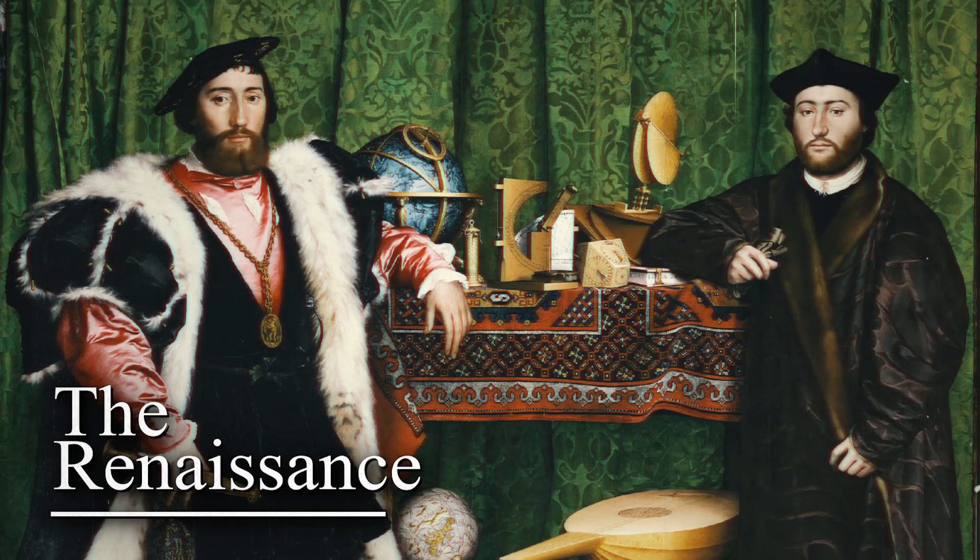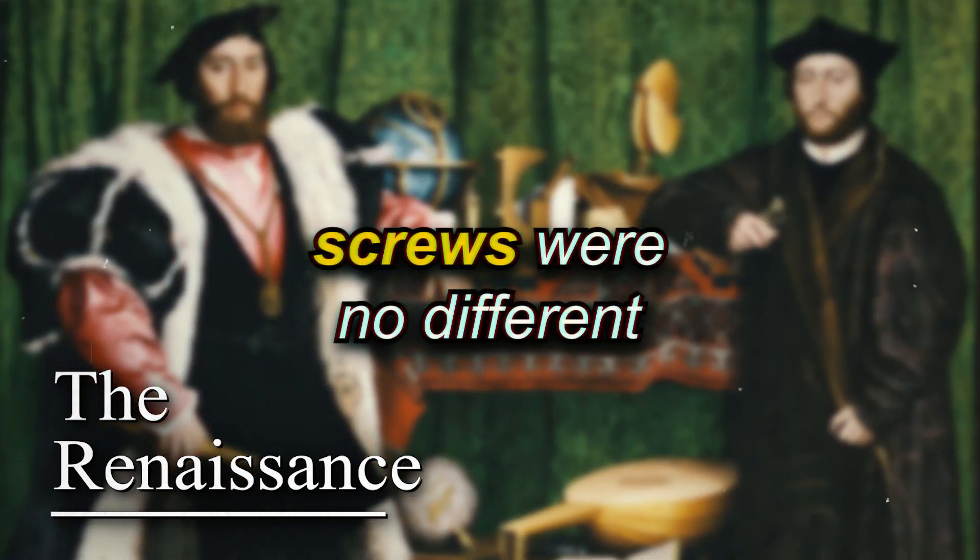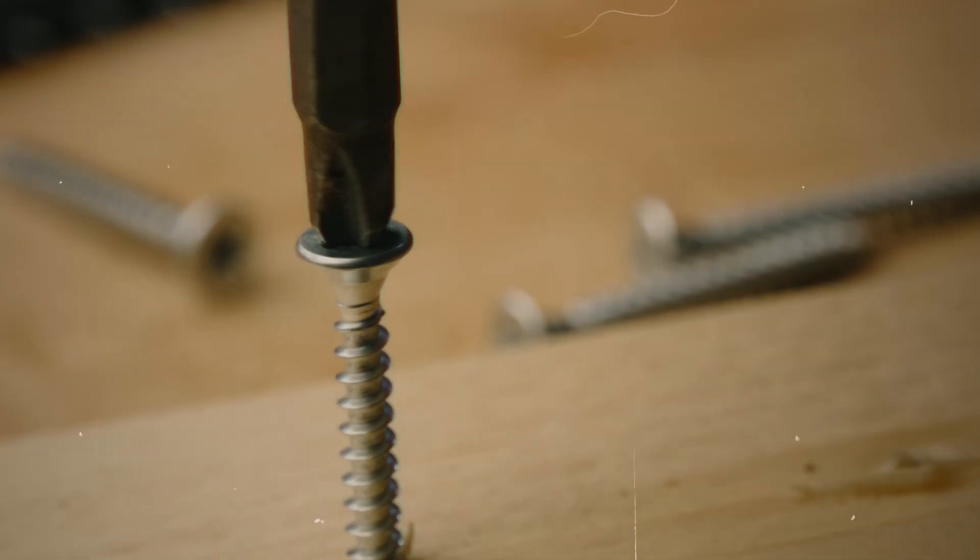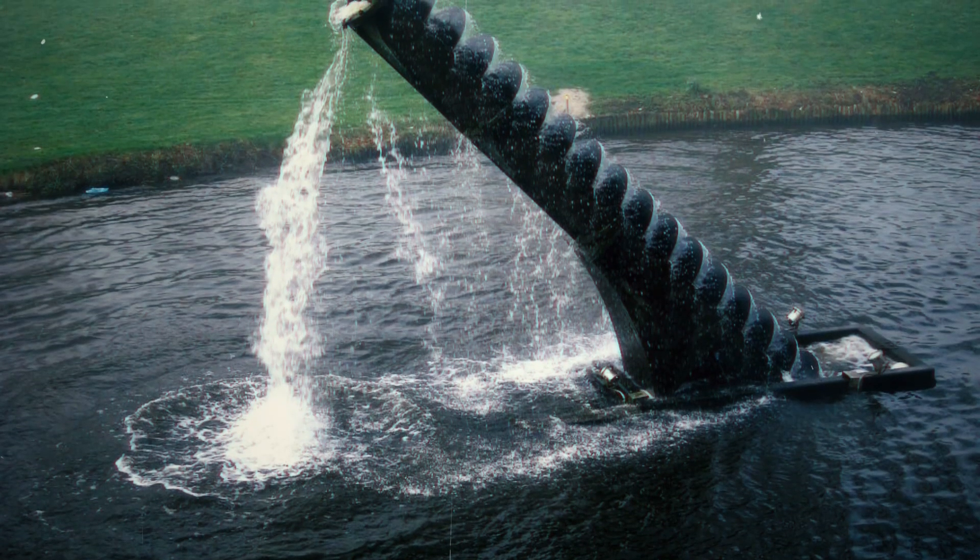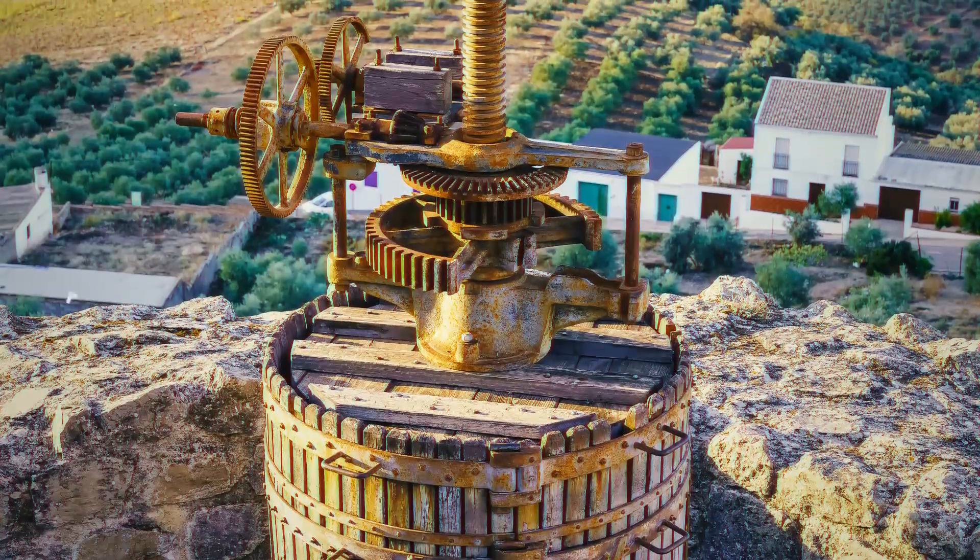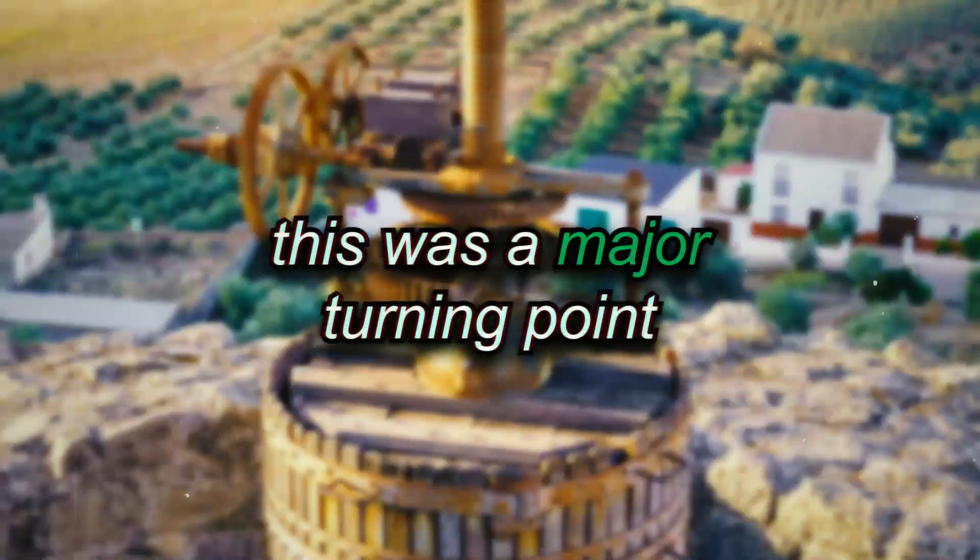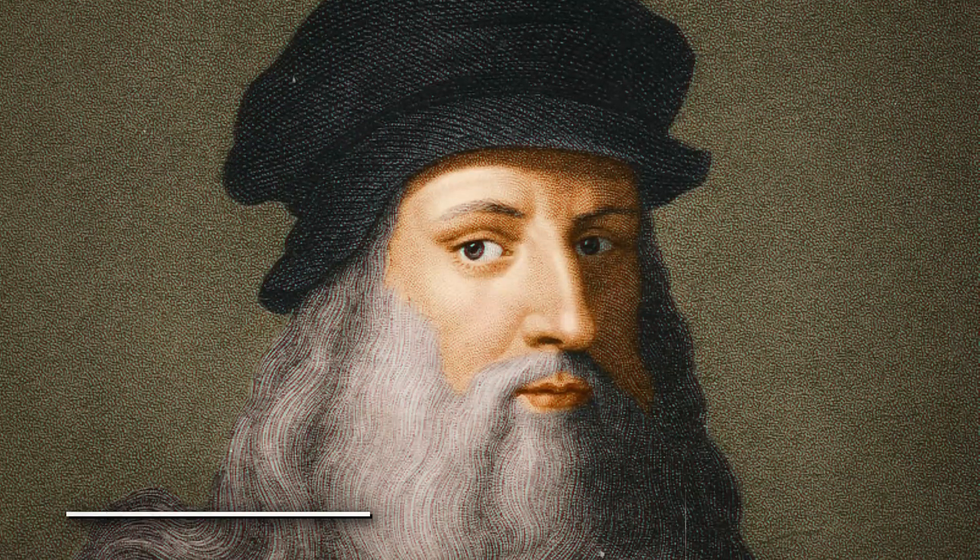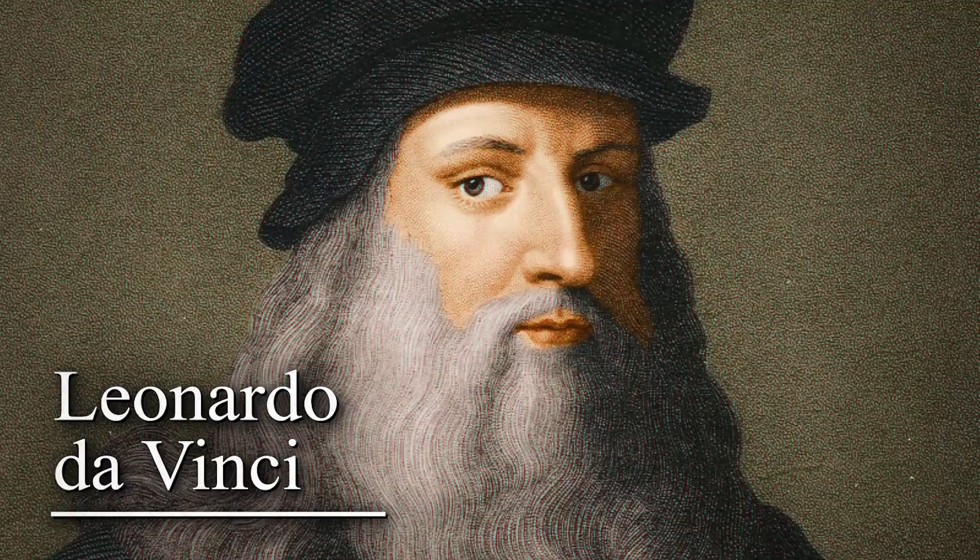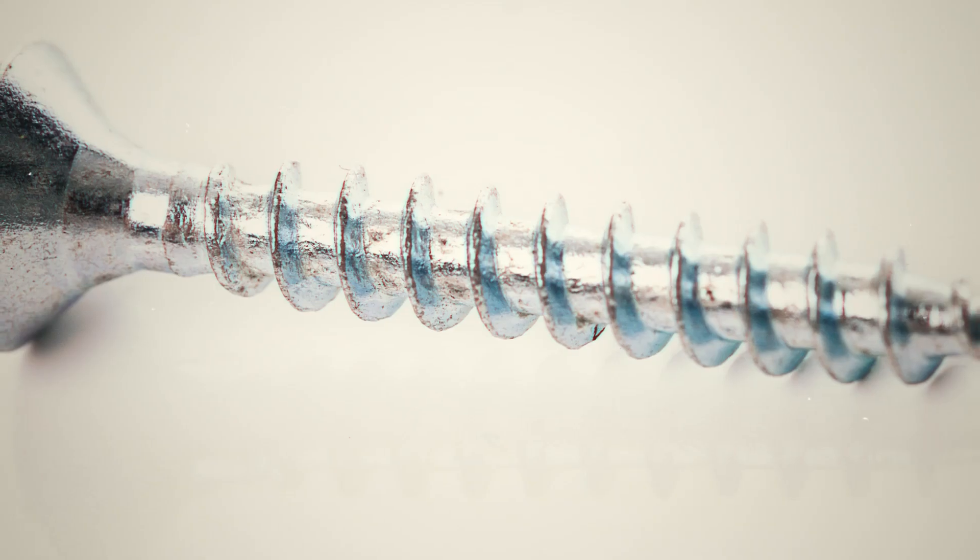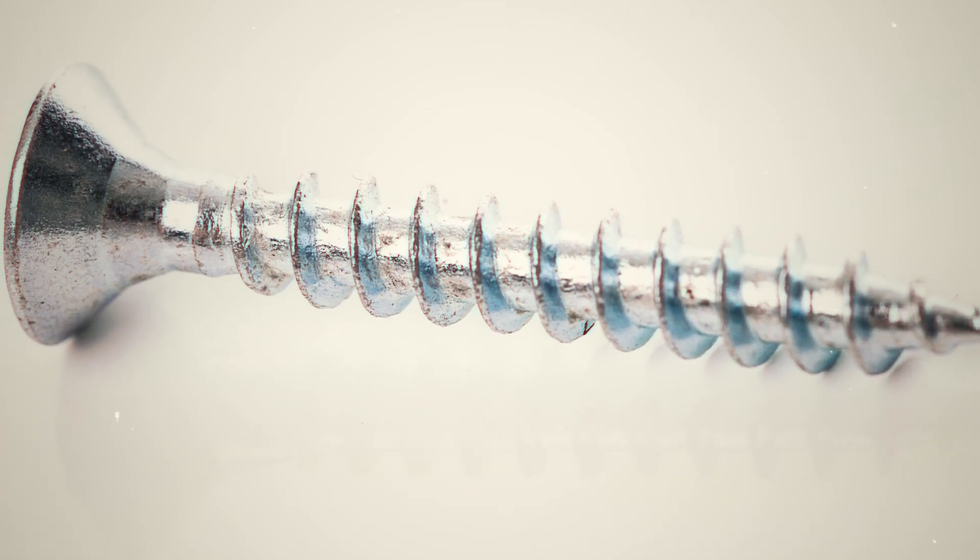The Renaissance was a time of great innovation, and screws were no different. One of the biggest changes was how screws evolved from just a tool to a fastener. The Archimedean screw moved water, but the screws used in Roman presses showed how they could hold things together. This was a major turning point. During the Renaissance, engineers like Leonardo da Vinci created tools to make screws with more precision. Leonardo invented a screw-cutting lathe, a machine that could make screws with smooth, even threads.